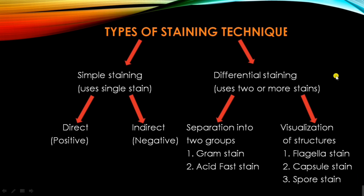Based on the requirement, differential staining is divided into two groups: separation into two groups, and visualization of structures. In separation into two groups, examples include gram stain and acid-fast stain. If you want to separate a group of bacteria into two subgroups, we call it separation into two groups of differential staining.